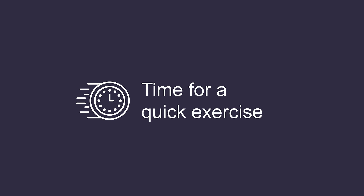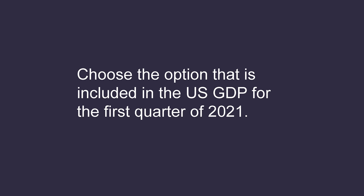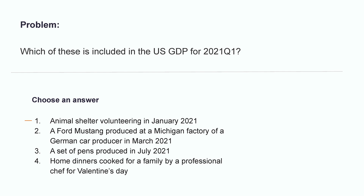Time for a quick exercise. Choose the option that is included in the US GDP for the first quarter of 2021. Option one: animal shelter volunteering in January 2021. Option two: a Ford Mustang produced at a Michigan factory of a German car producer in March 2021. Option three: a set of pens produced in July 2021. Option four: home dinners cooked for family by a professional chef for St. Valentine's Day. If you said option two, you are correct. Only option two will be included. Remember, non-market activities like volunteering or home production are not included in GDP. GDP for the first quarter will only include goods and services produced in that quarter — January, February, and March — which is why the set of pens produced in July will not be included.